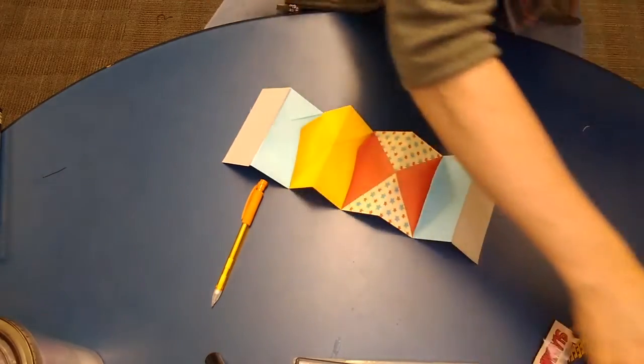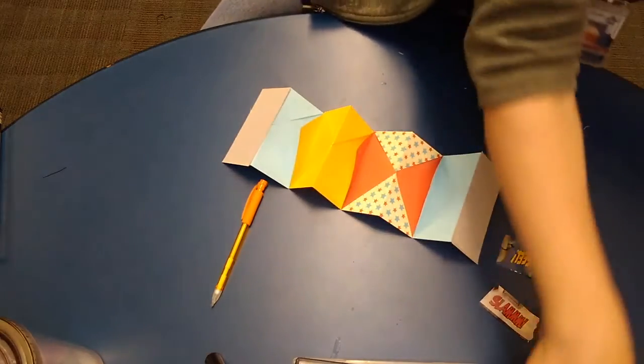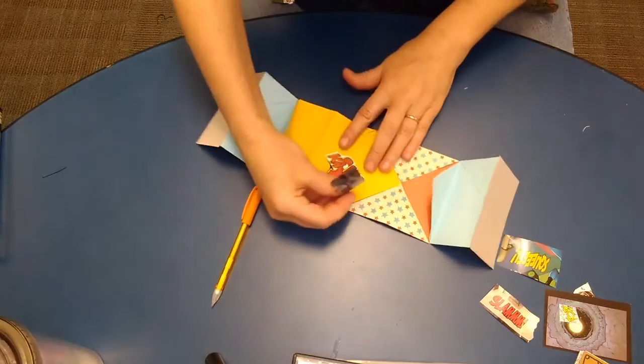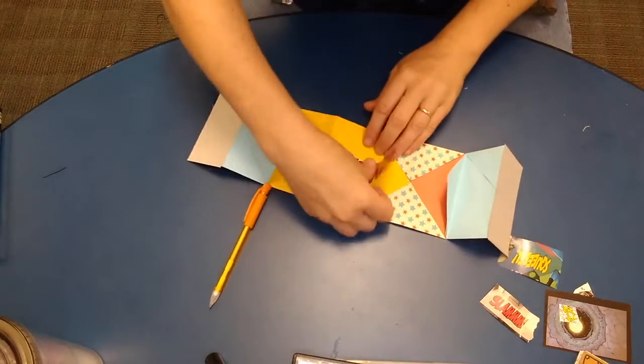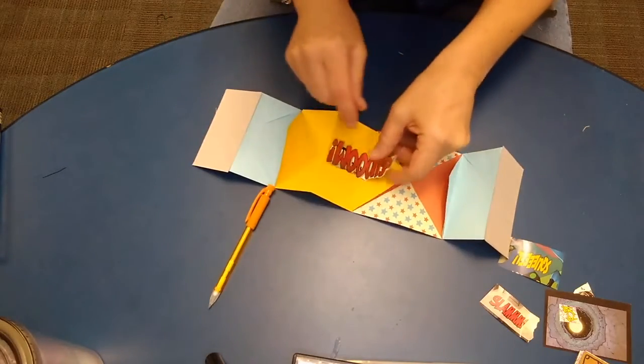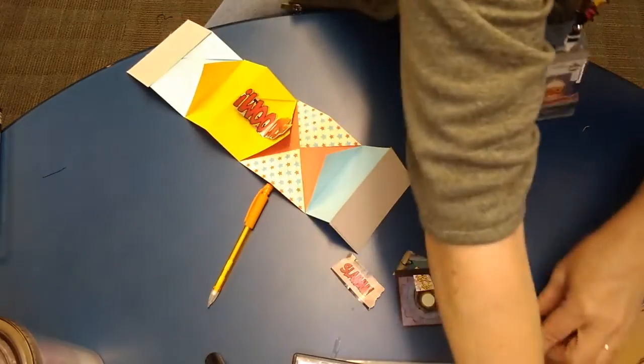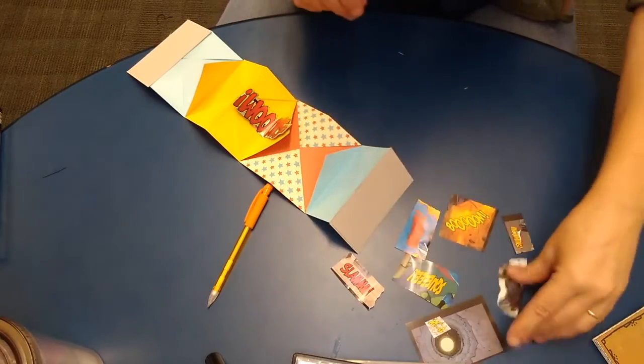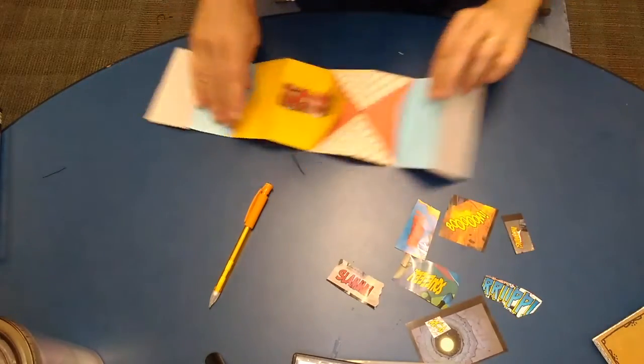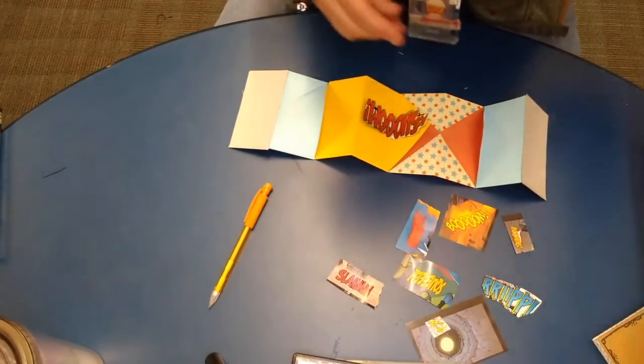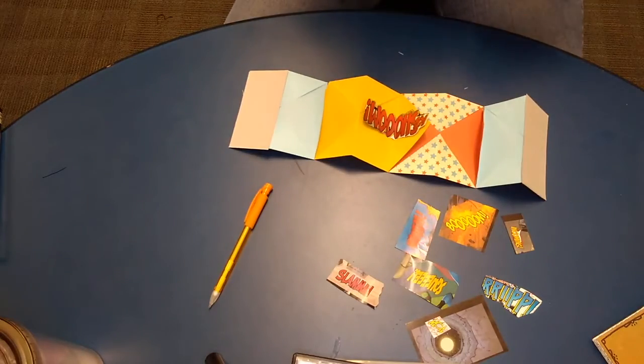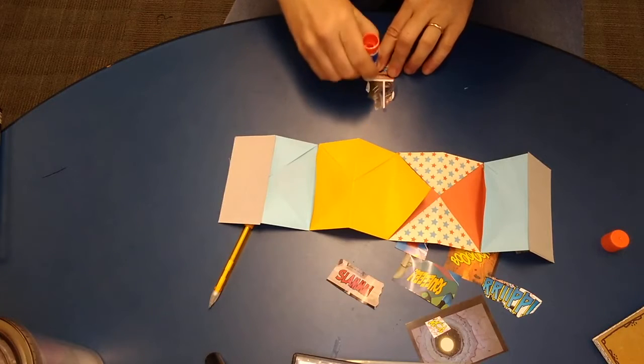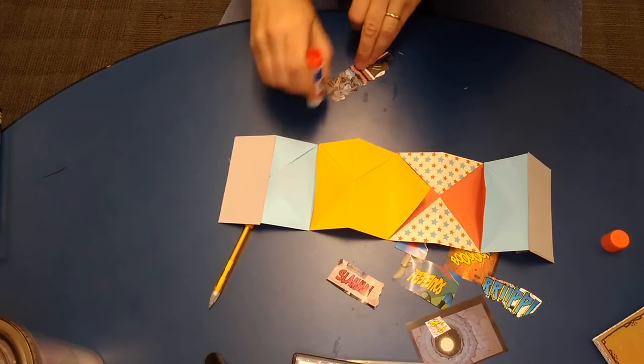But what I'm going to do is take some of the stuff I cut out from the comic books and glue them into my book. So here are the things I cut out. I'm going to put this here. Sorry, table. You are going to get glue on you.